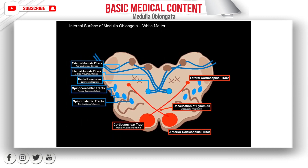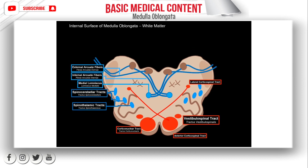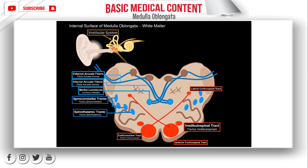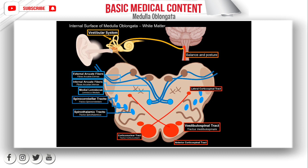Next are the corticonuclear tracts, which descend in the same area as the corticospinal tract and are responsible for voluntary control of muscles located in the head and neck. The next descending tract is the vestibulospinal tract. Inside the inner ear, we have the vestibular system, which has crystals sensing the position of your head — whether it's tilted upside down or to the side. Through the vestibular nerve, this information is sent to the brainstem and then down the spinal cord to keep your balance and posture. The vestibulospinal tract provides unconscious balance since it doesn't originate from the cortex.